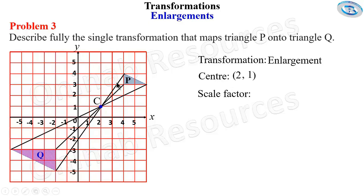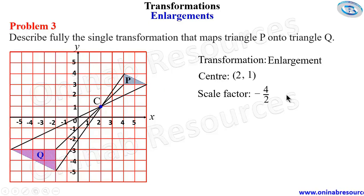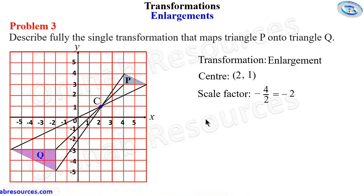For the scale factor, since the center is between the object and the image, the scale factor is going to be negative. We get the length of image triangle Q and divide by the length of object triangle P. Taking the corresponding side: the image side is 1, 2, 3, 4 — four units; the object side is 2 units. That gives 4 over 2, and since the scale factor is negative, it equals negative 2. This fully describes the transformation that maps triangle P onto Q. End of Problem 3.